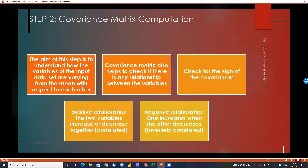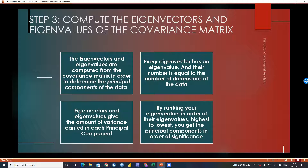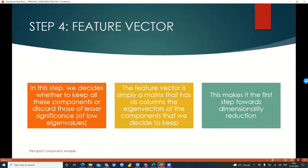The next step is computation of the eigenvectors and eigenvalues of the covariance matrix. Eigenvectors and eigenvalues are computed from the covariance matrix in order to determine the principal components of the data. Every eigenvector has an eigenvalue, and the number is always equal to the number of dimensions of your data. Eigenvectors and eigenvalues give the amount of variance carried in each principal component. By ranking eigenvectors in order of eigenvalues from highest to lowest, you get the principal components in order of their significance.